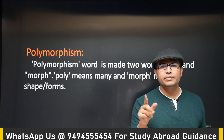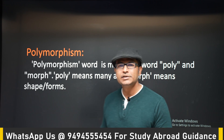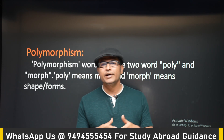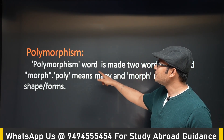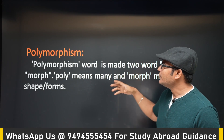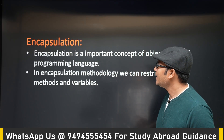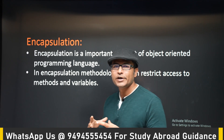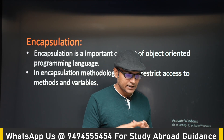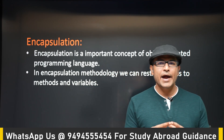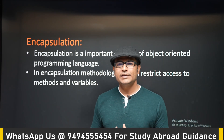Polymorphism means the same name but different functions. For example, the plus operator applied to strings performs concatenation, while applied to integers it performs addition — the same thing has different meanings based on the situation. Encapsulation means putting everything together. All related things put together is encapsulation — in a class, we put all the attributes together and all the methods that act on those attributes together.